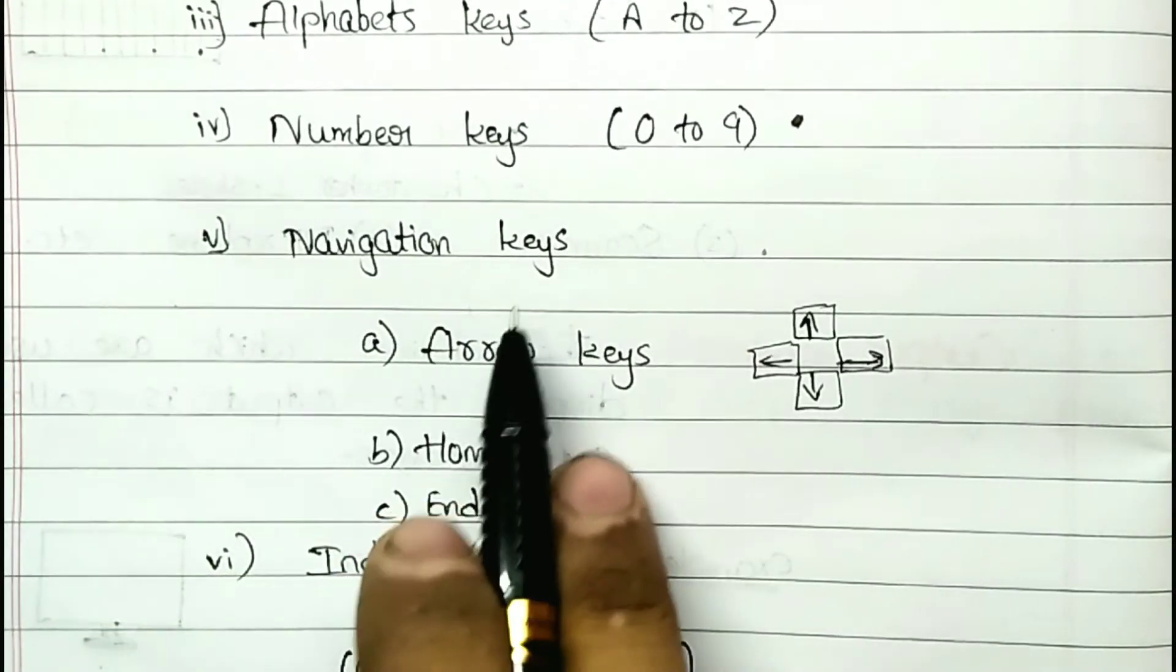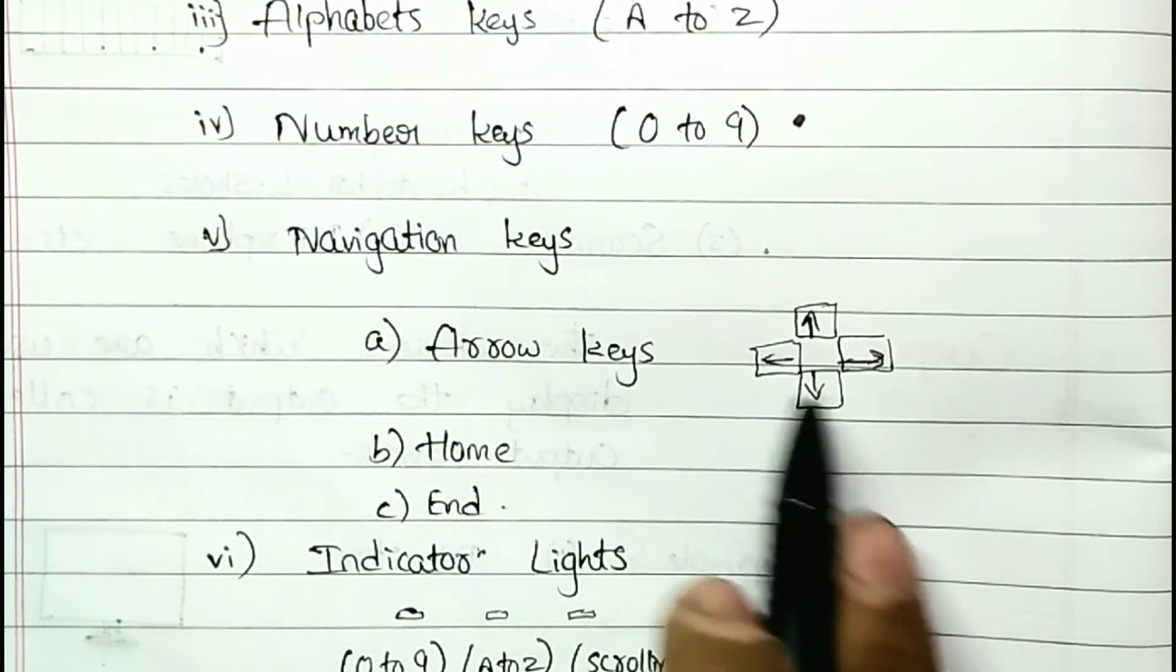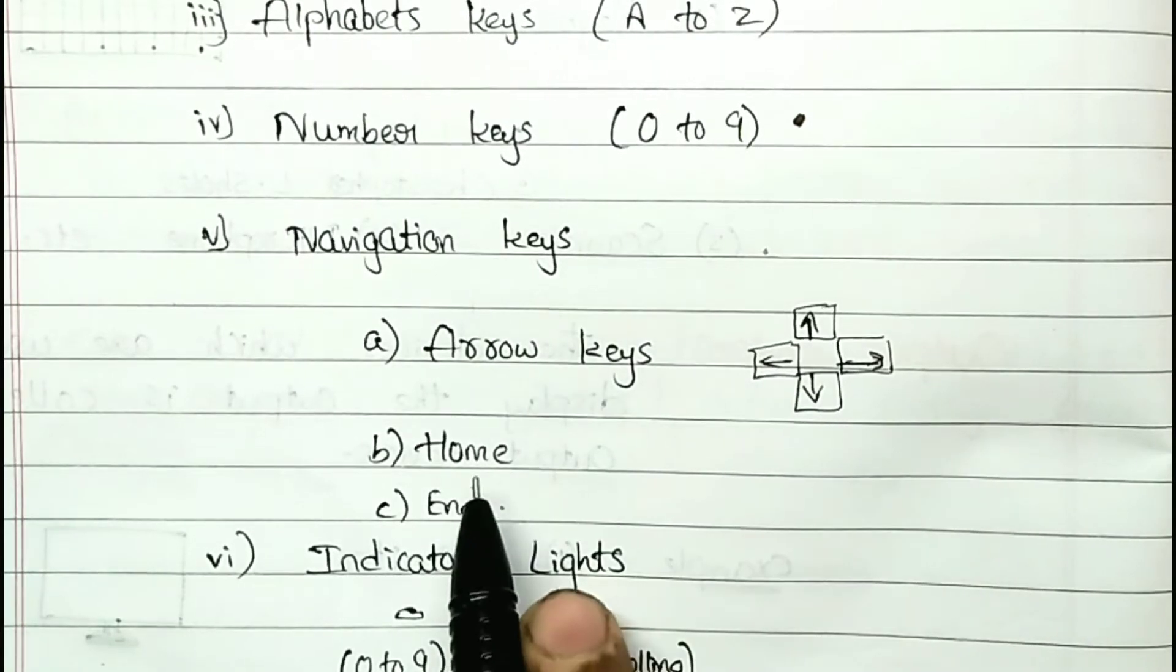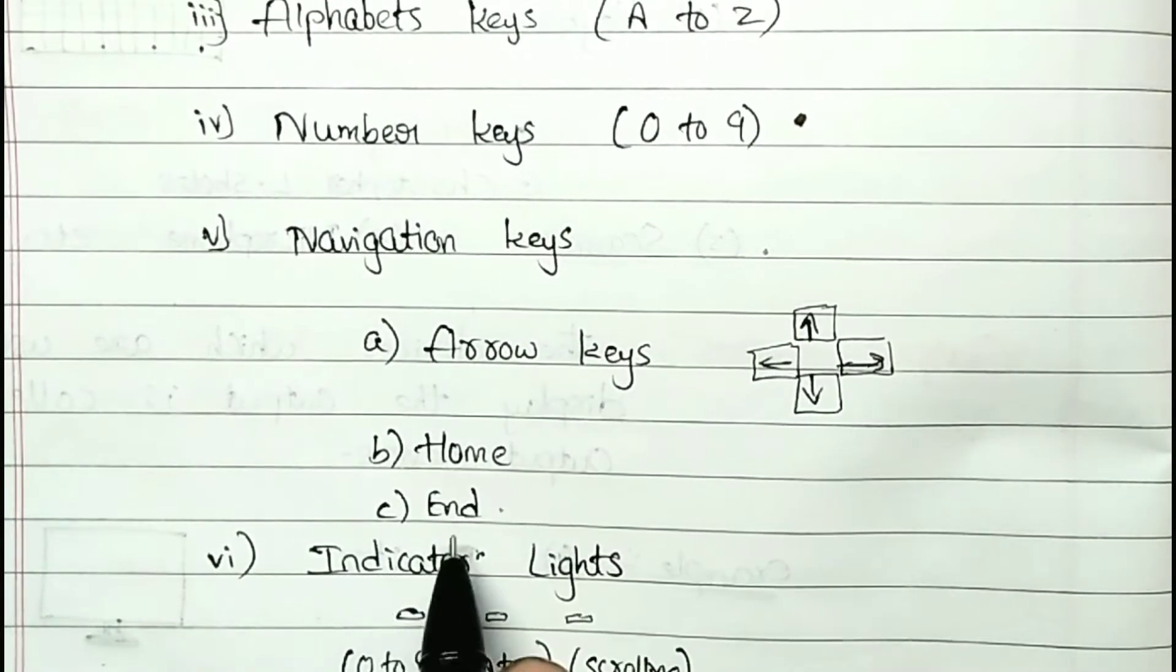Navigation keys. Arrow keys: upward, downward, sideways. These are the arrow keys. Home key, and then end key.